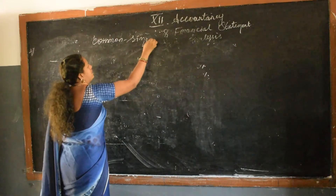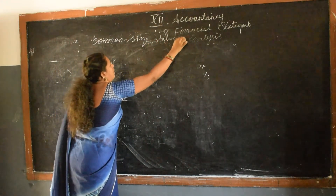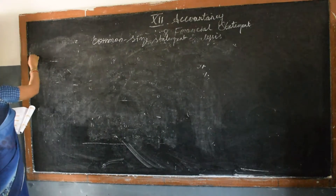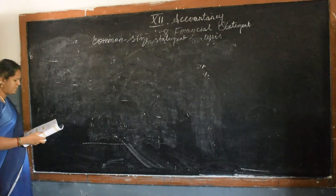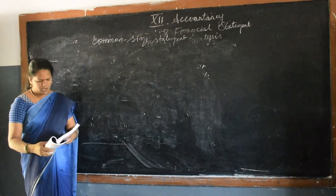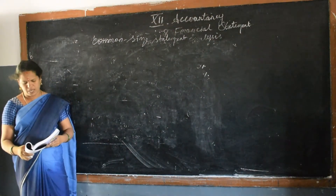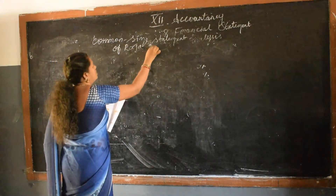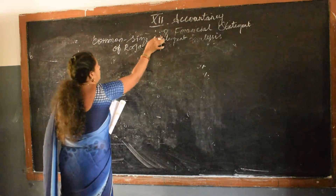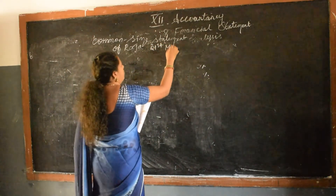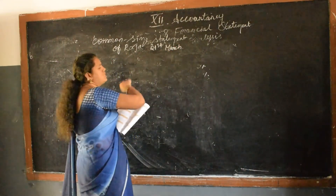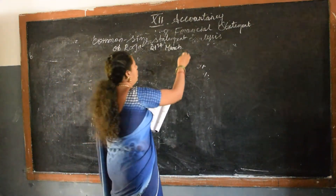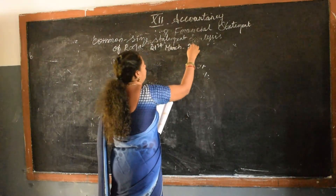What do you mean by common size statement? The base that you are going to divide by is kept common for all items. We are moving on to this. The problem is: prepare the common size statement for the following particulars of Raja Limited for the year ended 31st March 2017. We should know why all accounts are prepared on 31st March — because this is the accounting year end. The accounting year runs from 1st April to 31st March, so all accounts are closed on 31st March only.